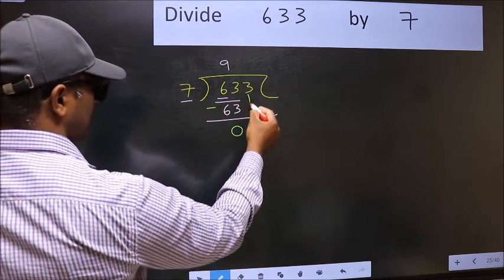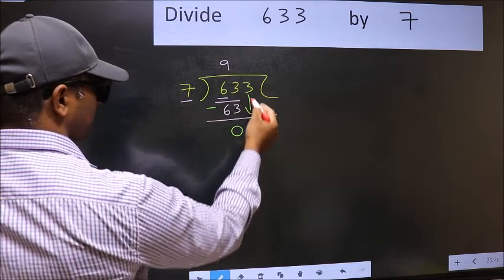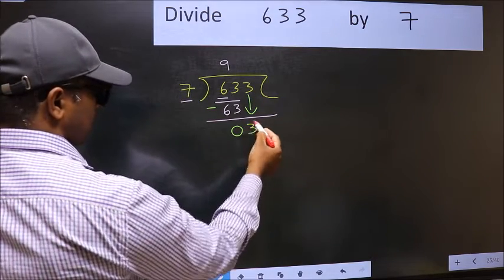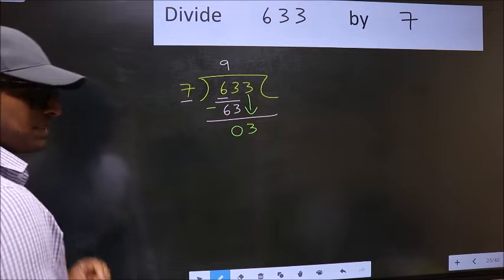After this, bring down the beside number. So 3 down. After this step, the mistake happens.